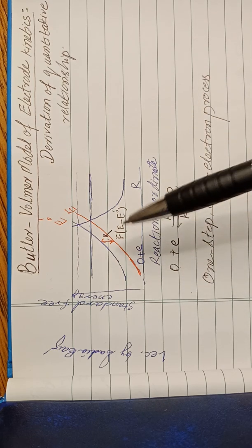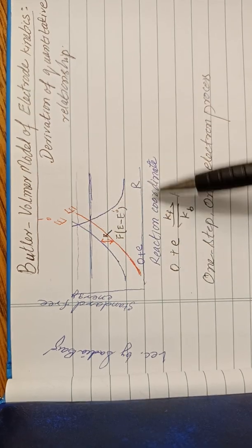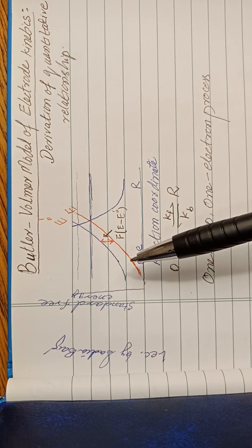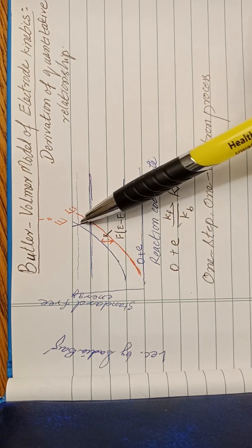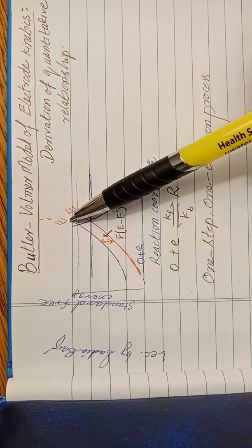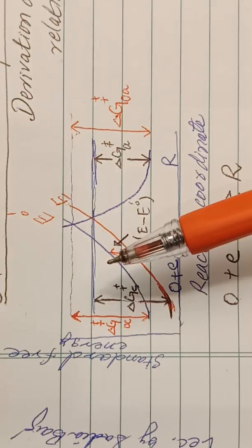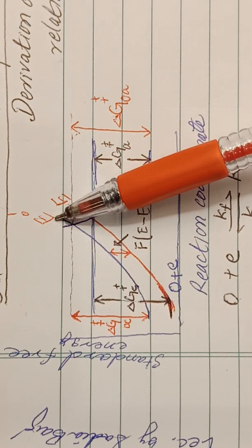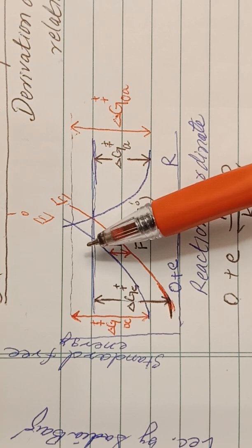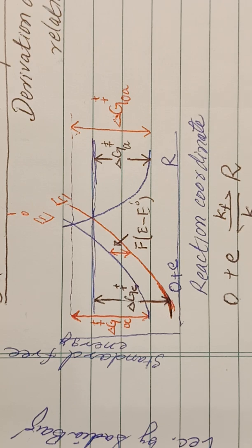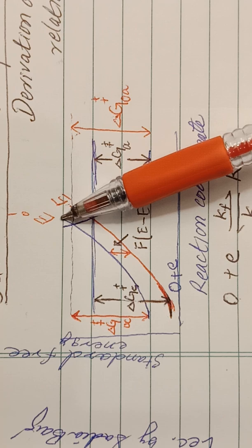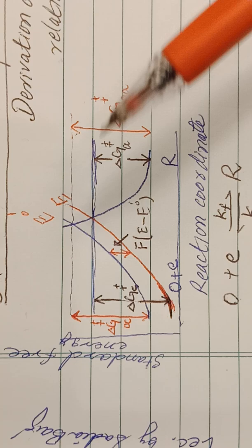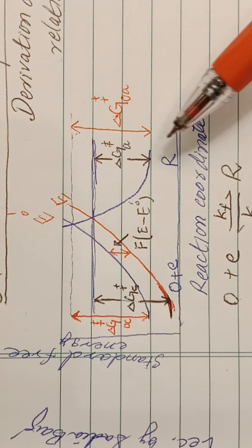Suppose that the standard free energy profile along the reaction coordinate has a parabolic-like shape. The blue line depicts the free energy change at equilibrium condition, where the potential of the system is E-naught. This standard electrode potential serves as the reference point. For this one-electron transfer process, the cathodic and anodic activation energies are shown in red.